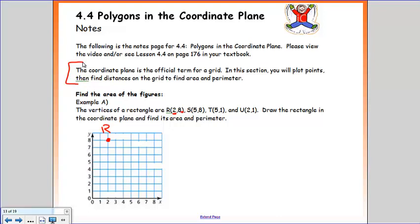The second point is S. It is at 5,8, so that would mean over 5 and up 8 spots. I'll put it on the intersection of the lines, and I'm going to call it letter S. T is at 5,1, which means over 5, up 1. And U is at 2,1, over 2 and up 1.